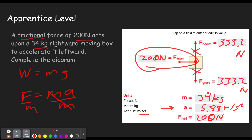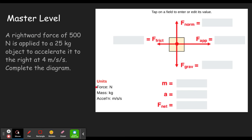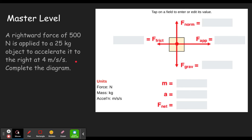The other apprentice level problem gives you the acceleration and has you solve for the other things — you can just work backwards using the same equations. Moving up to the master level, you can see there are now two horizontal forces, which is why we're stepping up in difficulty.